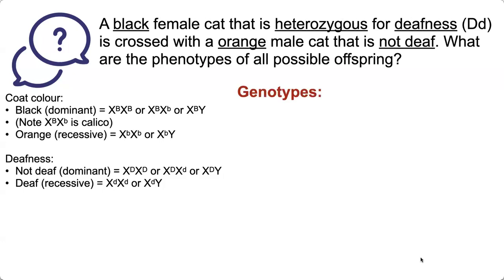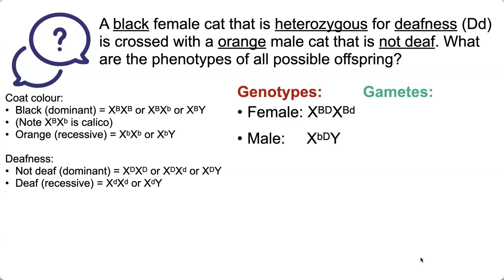So now, what are the genotypes of the cats in the question? This is the genotype of the female — she is black, so we know she has two big B alleles, and she's heterozygous for deafness as stated in the question. This is the genotype for the male — he is orange, so he has a lowercase b, and he's not deaf. Next, we look at their gametes.